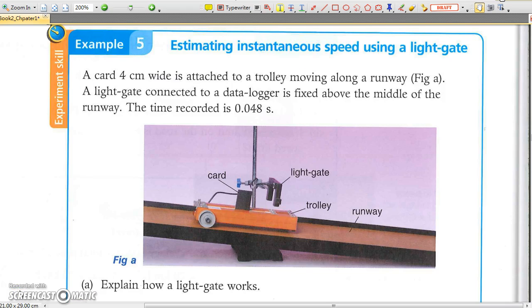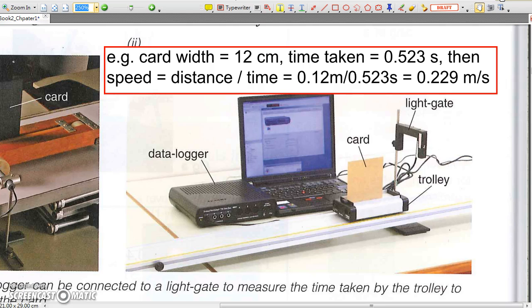Lastly, let's talk about light gate, which we have mentioned on page 6. A light gate measures the time when the light beam is blocked. We usually attach a card on a moving trolley and the width of the card is measured.